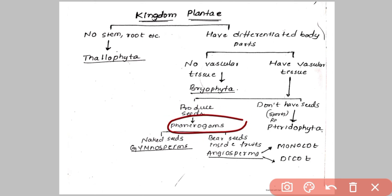Phanerogams has further divisions: naked-seeded plants and plants whose seeds are covered with fruit. Naked-seeded plants are called Gymnosperms — the seed is not enclosed within a fruit. Angiosperms are plants whose seeds are covered by a fruit.